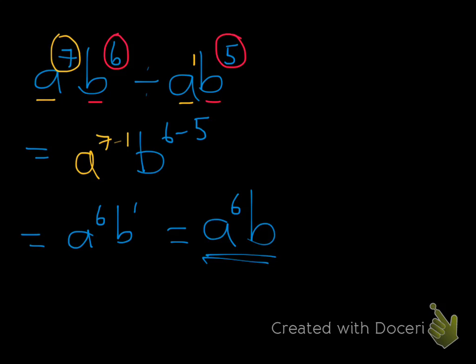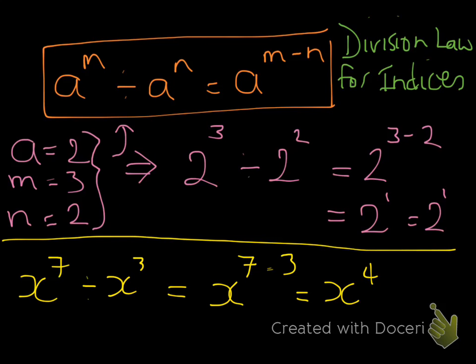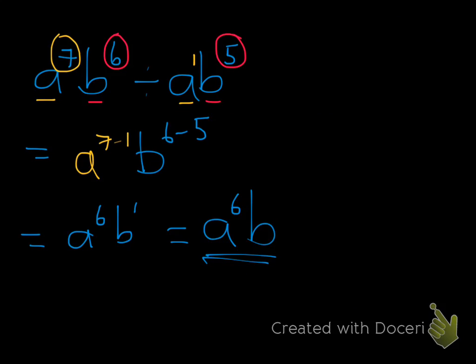That's the second law for indices, or the second index law. The first was the multiplication law of indices; this second one is the division law of indices, and they're both very straightforward. If you use this rule, you can't really go wrong: as long as your base number is the same, you simply subtract your powers when you divide two indices together. And that's it.